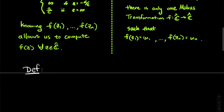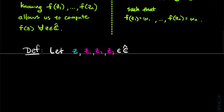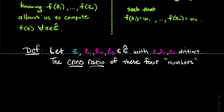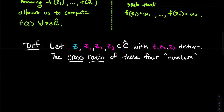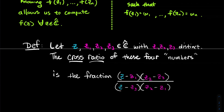The way we're going to answer this is by using the cross ratio — the tool this video is named after. Let z, z1, z2, and z3 be extended complex numbers, with z1, z2, z3 distinct. The cross ratio of these four numbers is the fraction (z − z1)(z2 − z3) divided by (z − z3)(z2 − z1).